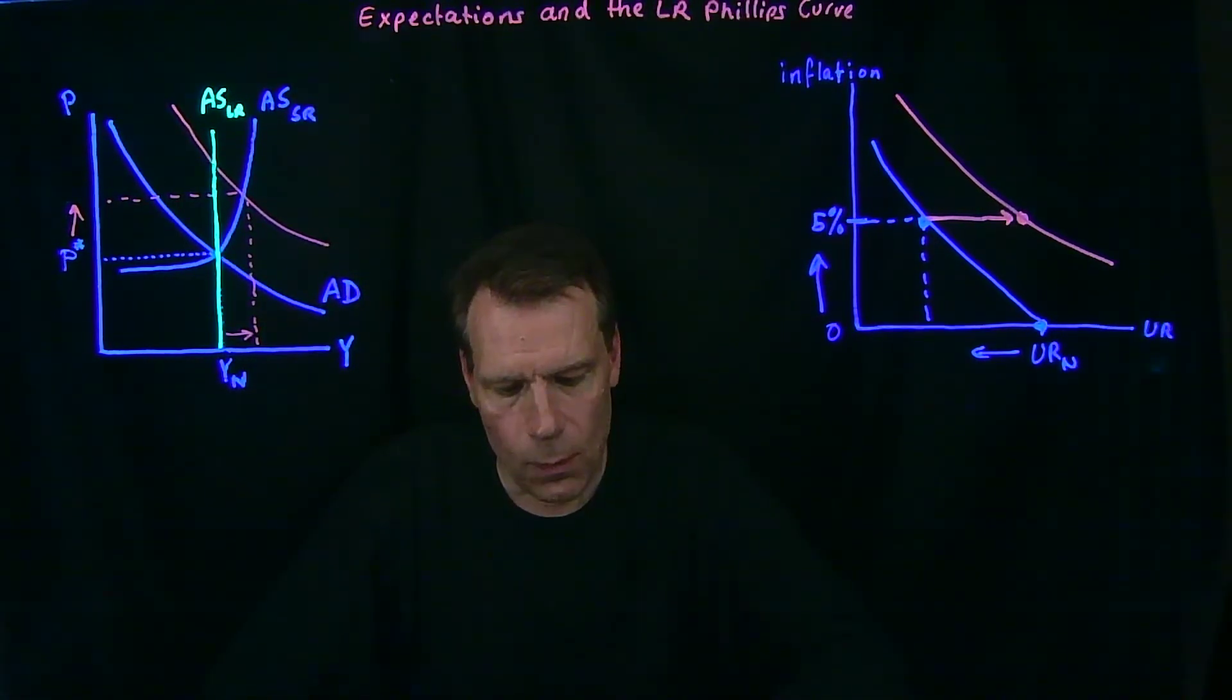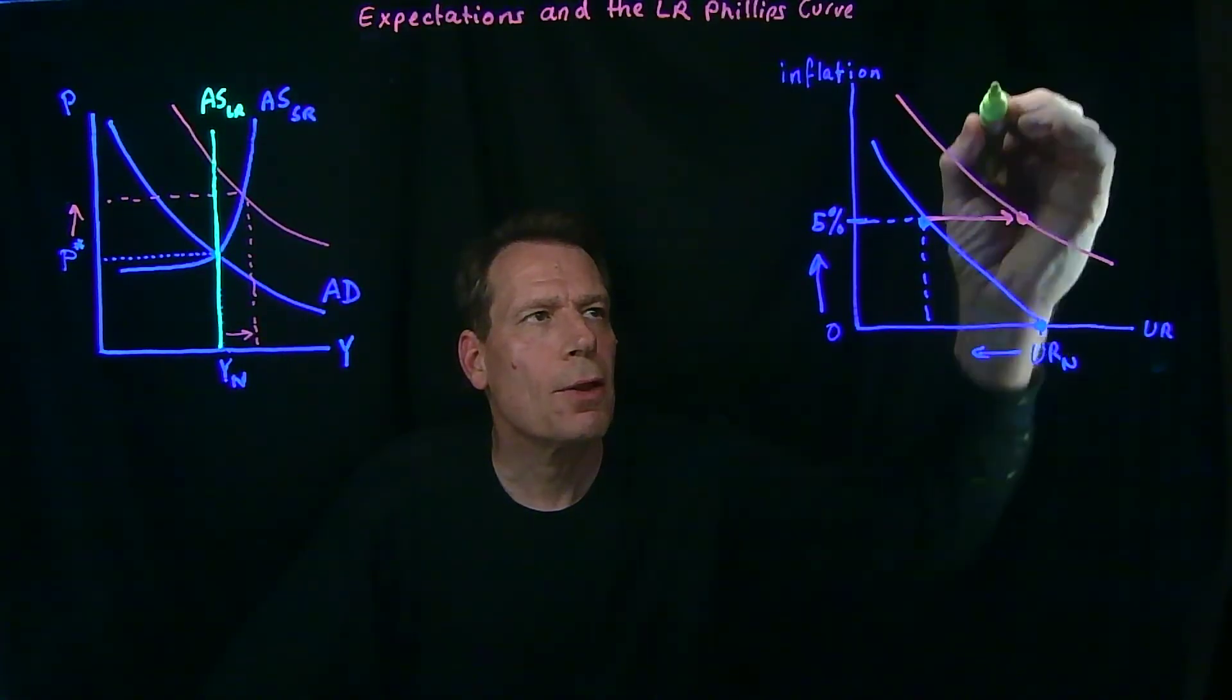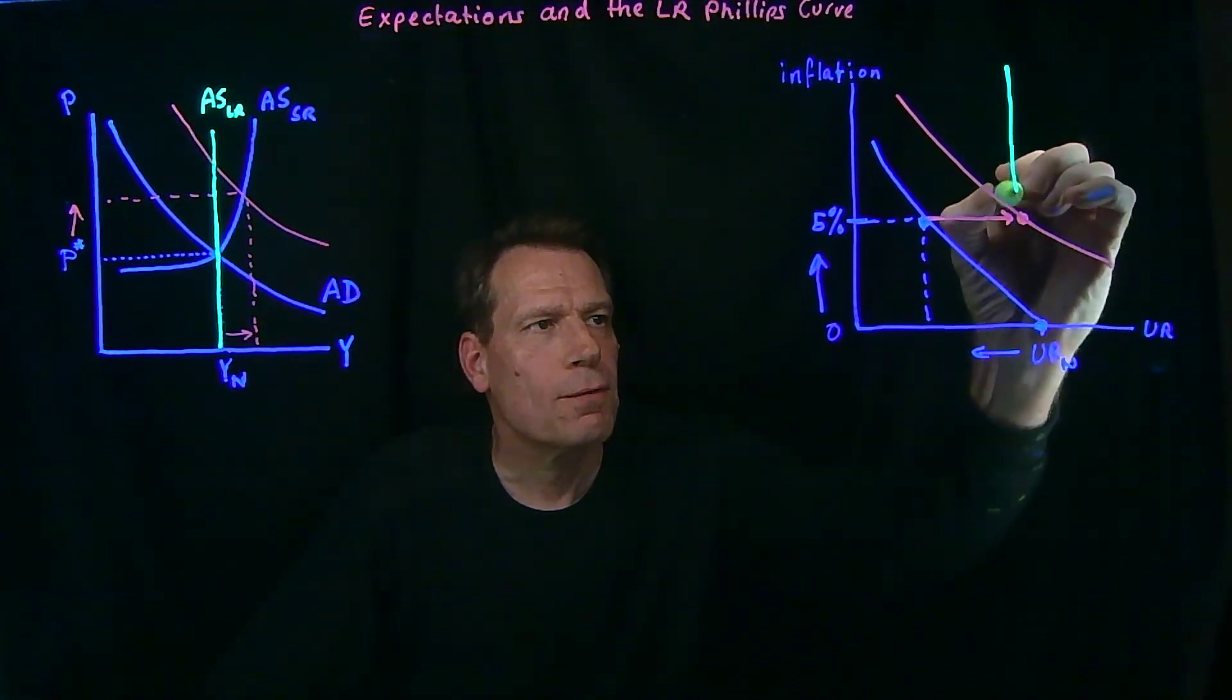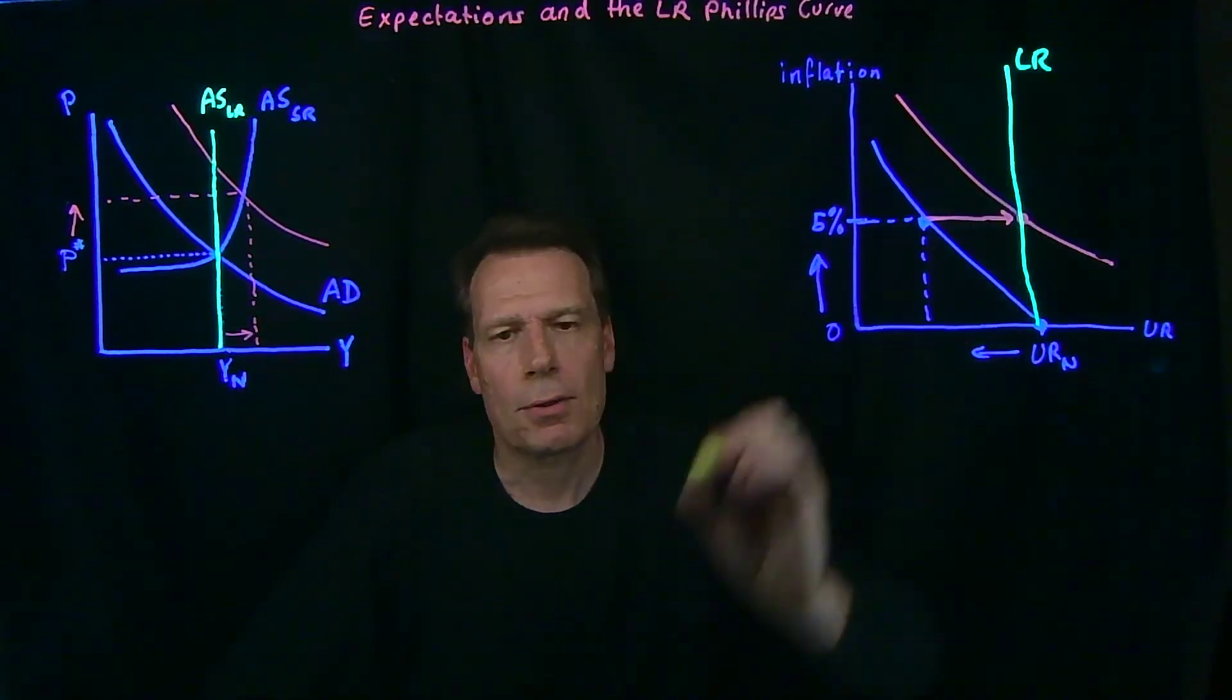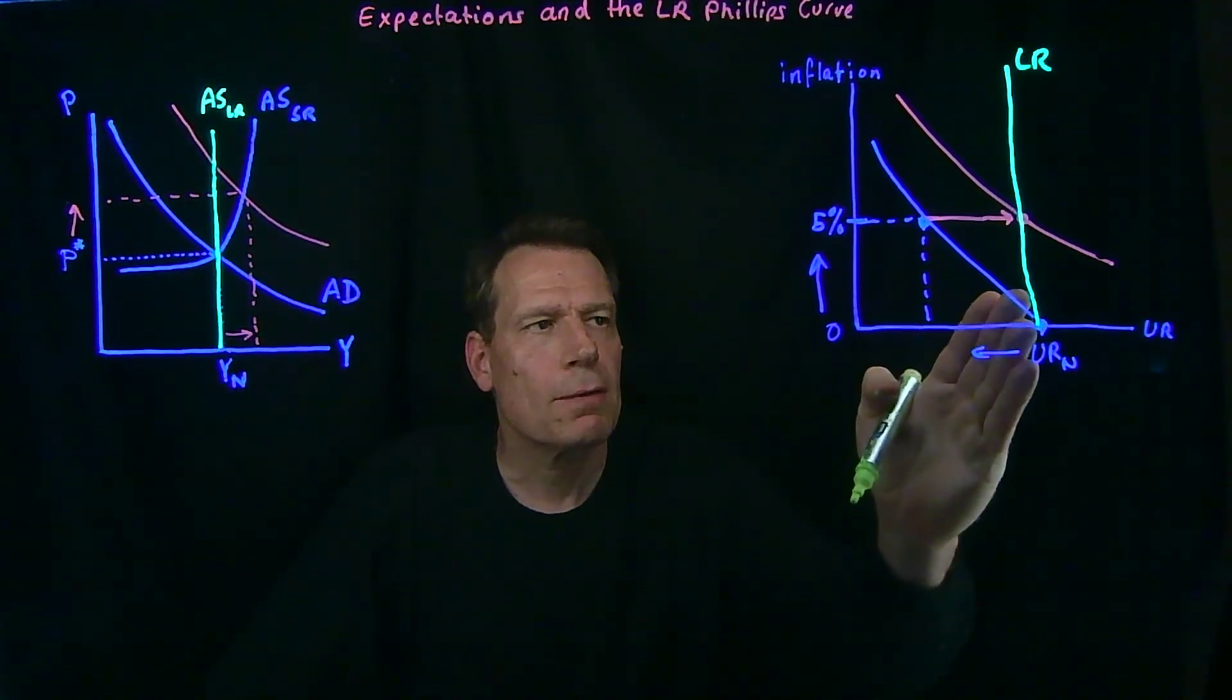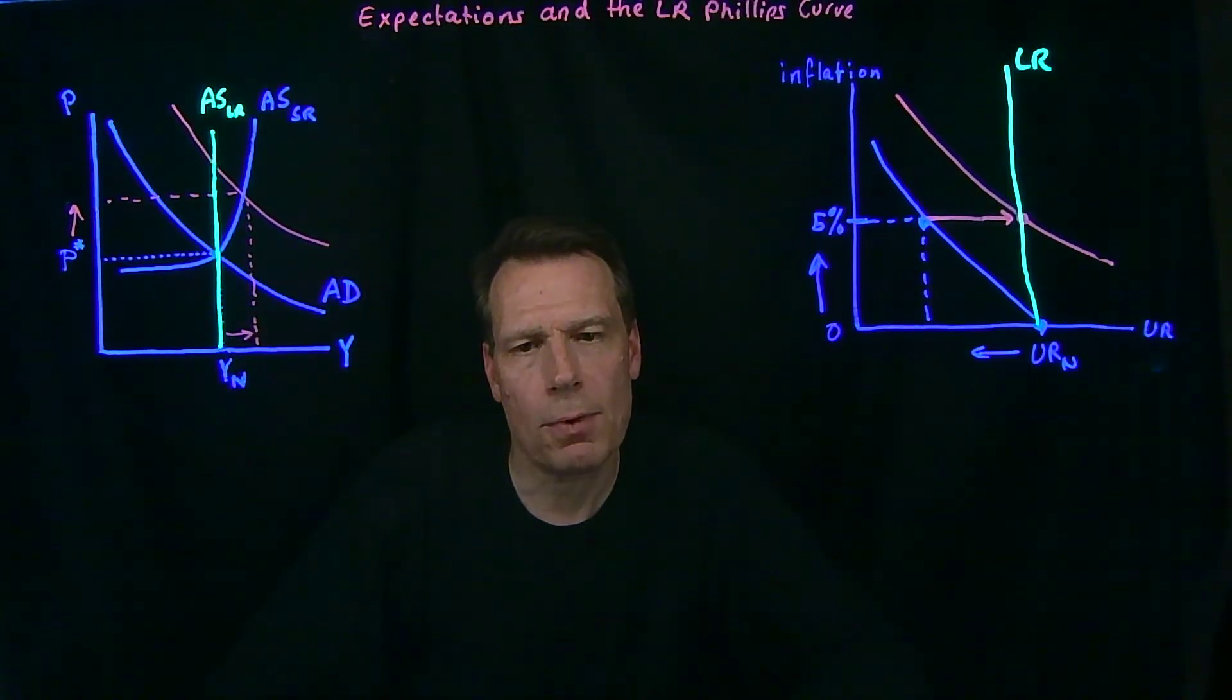In the long run, then, we end up at the same level of unemployment. In the long run, the Phillips curve is perfectly vertical. So, the long run Phillips curve is perfectly vertical, just like the long run aggregate supply curve is perfectly vertical.